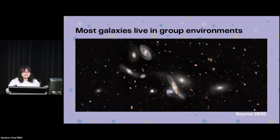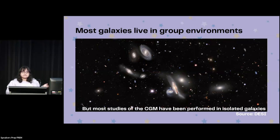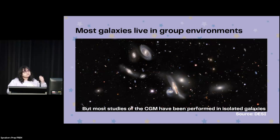We know that most galaxies live in group environments, but unfortunately most studies on the circumgalactic medium have only been performed on isolated galaxies. But what do we know about galaxies that live in group environments?